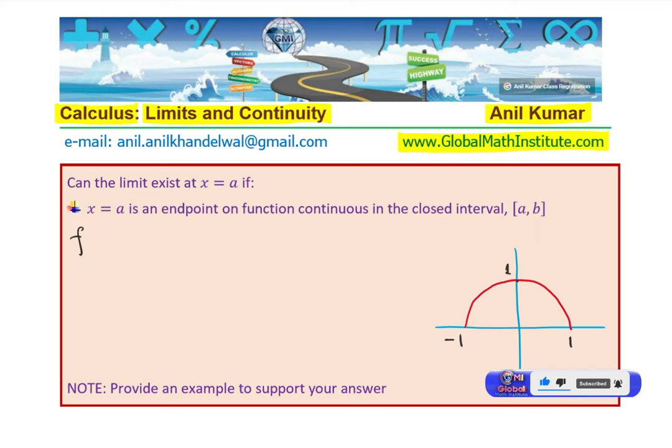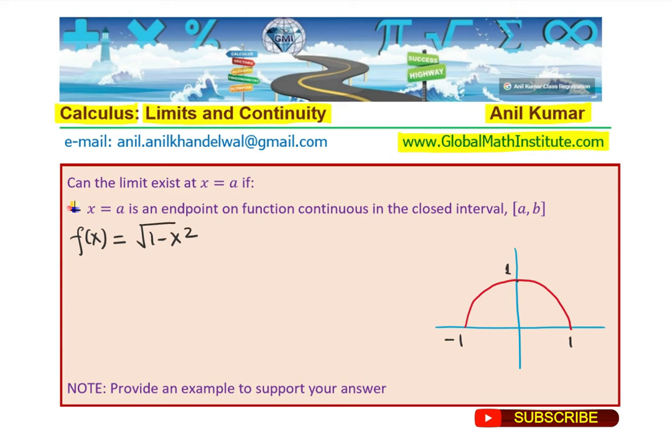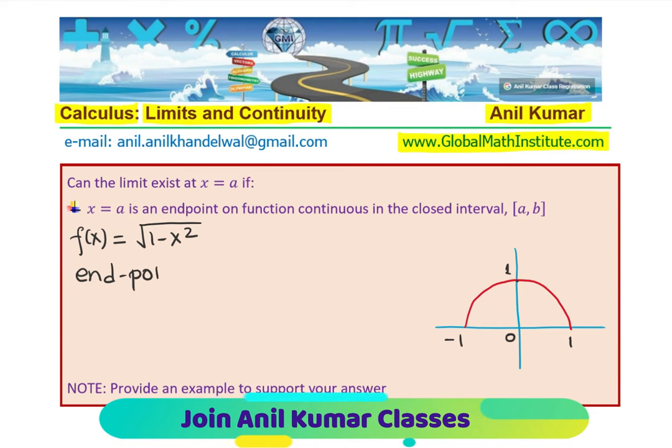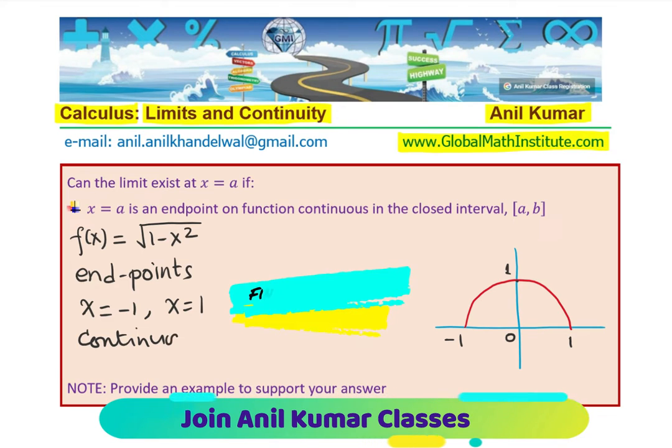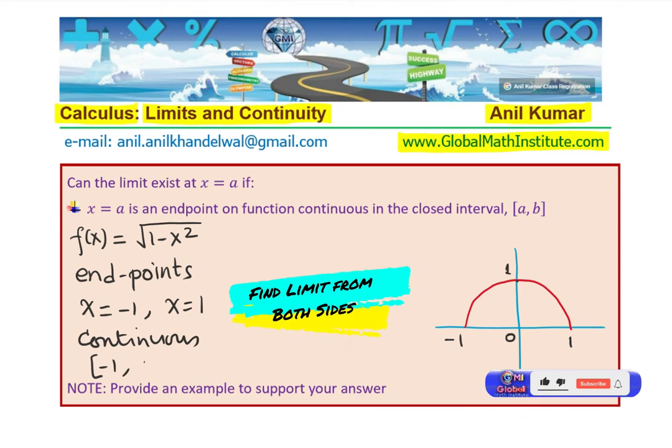I could write this function f(x) as equal to square root of 1 minus x squared. Now, that represents the semicircle drawn. Now, you can see that the endpoints are at x equals minus 1 and at x equals plus 1 and this function is continuous in the interval between it. That is from minus 1 to 1.